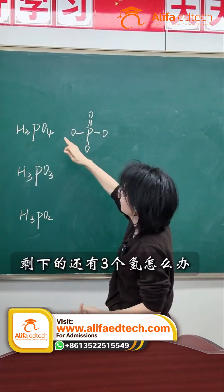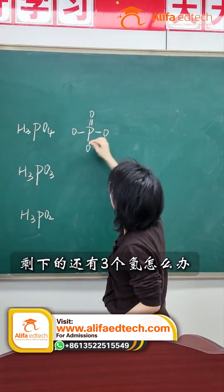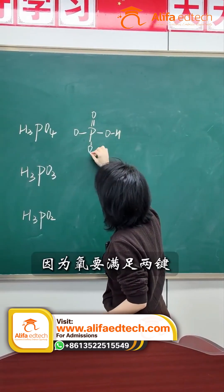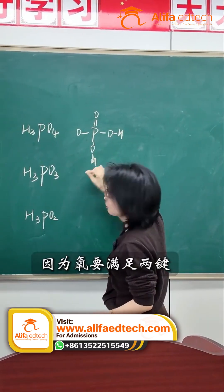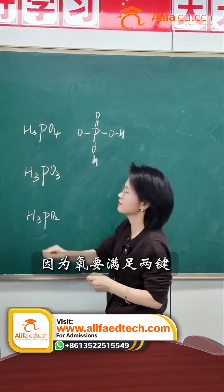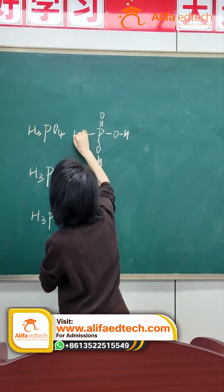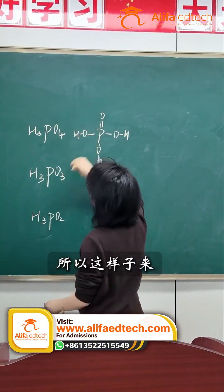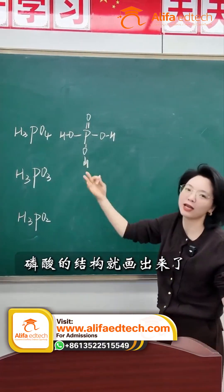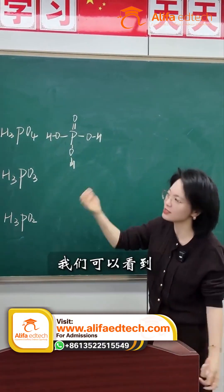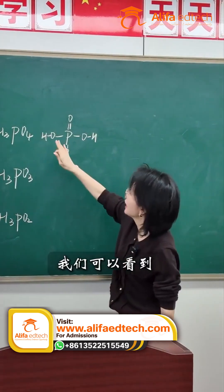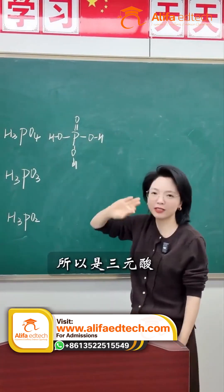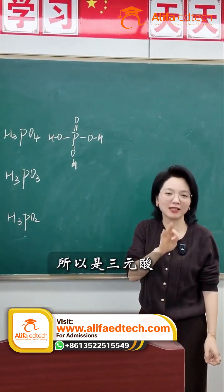What about the remaining three hydrogens? We place them on the oxygens, because oxygen needs to form two bonds. And just like that, we've drawn the structure of phosphoric acid. We can see that it has three hydroxyl groups. Therefore, it's a triprotic acid.